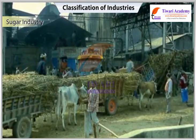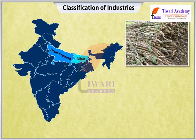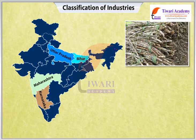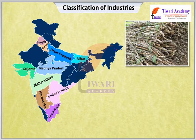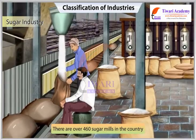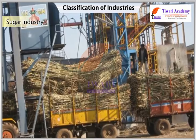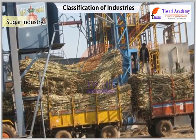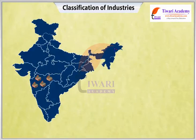The Indian sugar industry uses sugarcane in production, and the maximum number of companies is found in sugarcane-growing states including Uttar Pradesh, Bihar, Maharashtra, Karnataka, Tamil Nadu, Gujarat, Punjab, Haryana, and Madhya Pradesh. There are over 460 sugar mills in the country; 60 percent of mills are in Uttar Pradesh and Bihar. The industry is seasonal in nature, making it ideally suited to the cooperative sector, which has 252 mills.